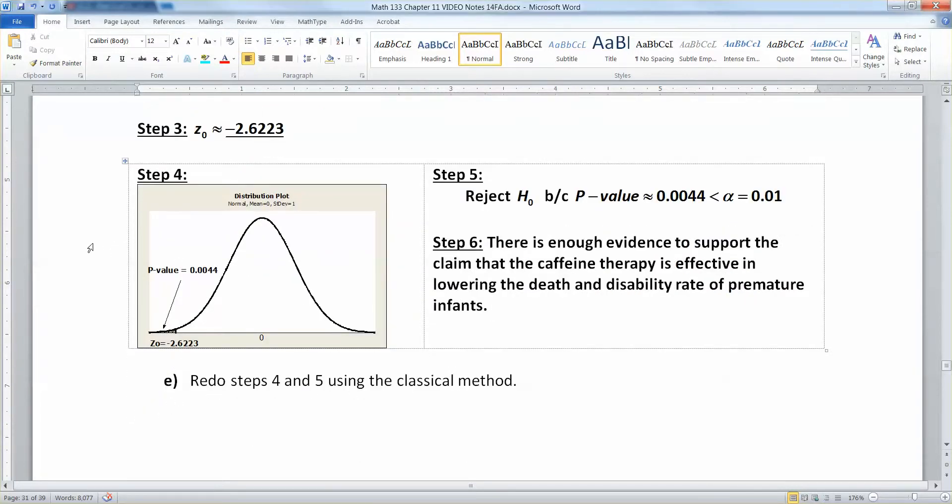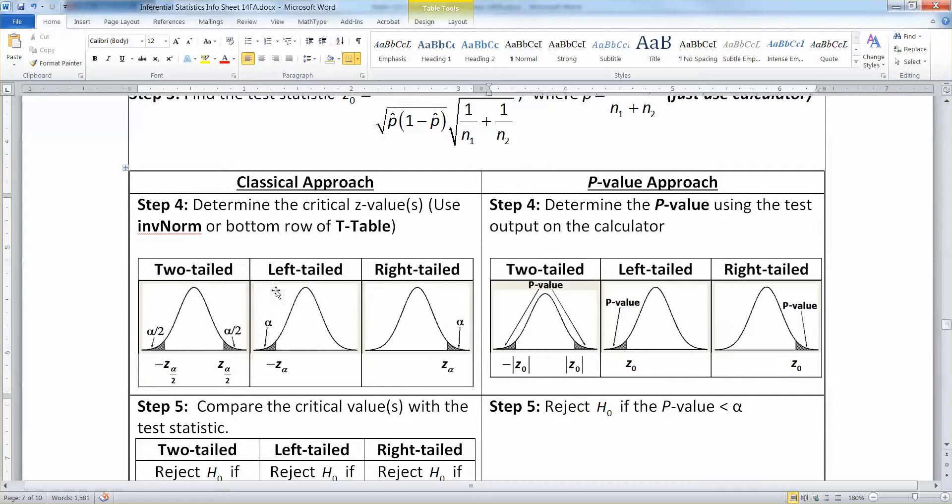All right, now to redo steps four and five, these two steps with the classical method, we need to redraw a picture, but it looks similar to the picture we drew, but it's not the same. It's left tailed, but you label it with alpha and you find negative Z alpha, that's your critical value, using either inverse norm or the bottom row of the T table.